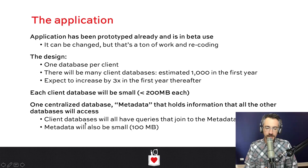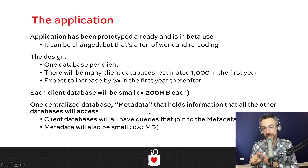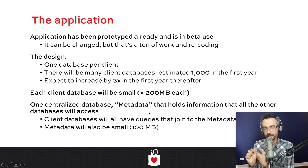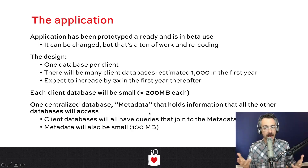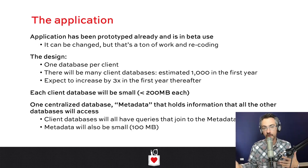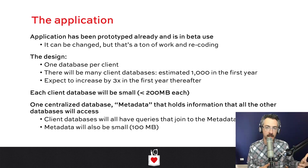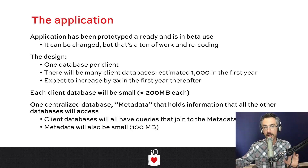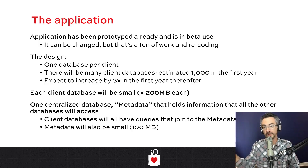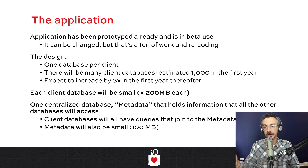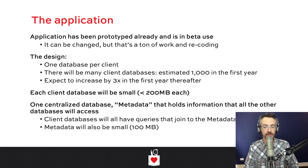There's one central database that has, for example, the list of clients and the list of users. Today, people are joining back and forth between the client database and the metadata database. The application makes lots of those kinds of queries — for example, group together all users in a given client and show me their sales.